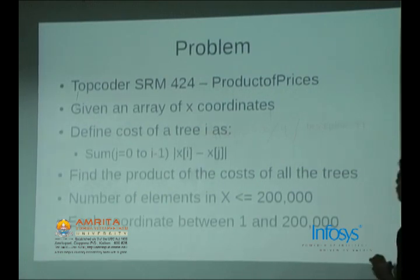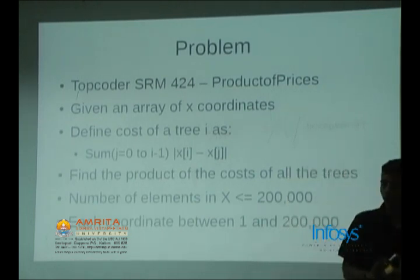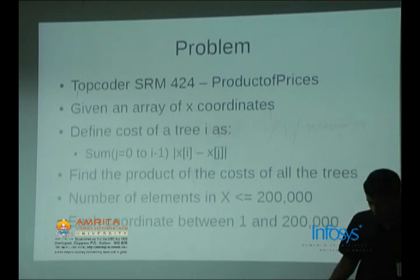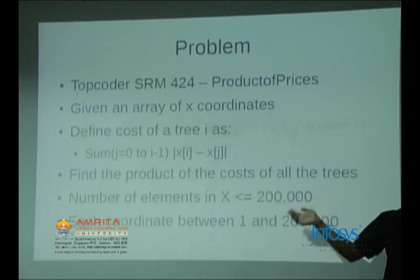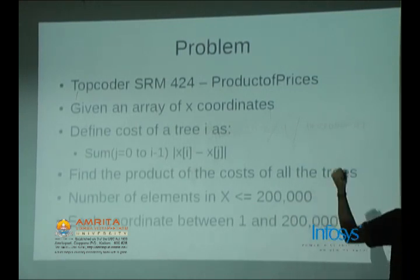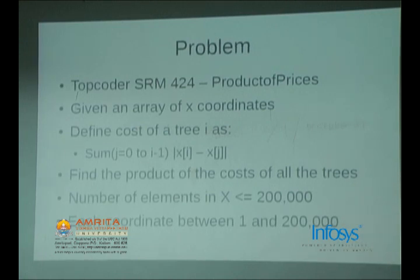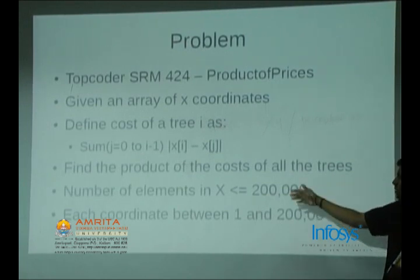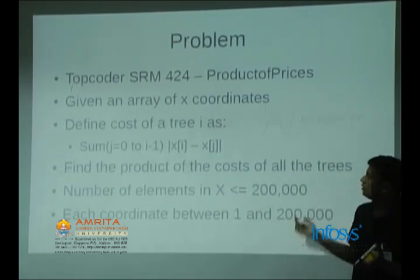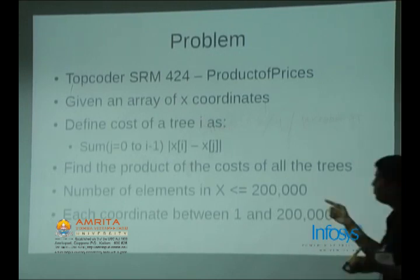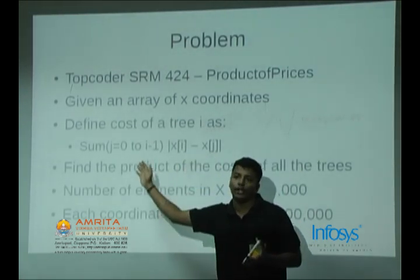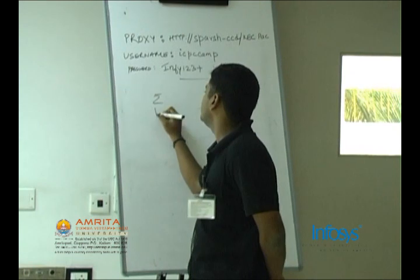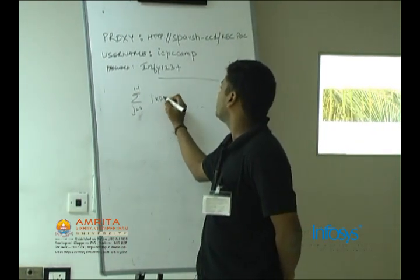We'll look at this problem: TopCoder SRM 424, problem name is 'Product of Prices.' I'll state the problem rather than have you read the statement. I'm given n trees, n up to 2×10^5, and also given the x-coordinates of those trees. There could be multiple trees at the same x-coordinate. The cost of tree i is defined as the summation of |x_i minus x_j| for every j occurring before i in the array.